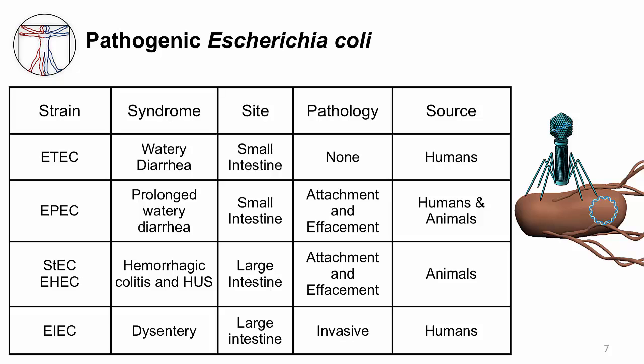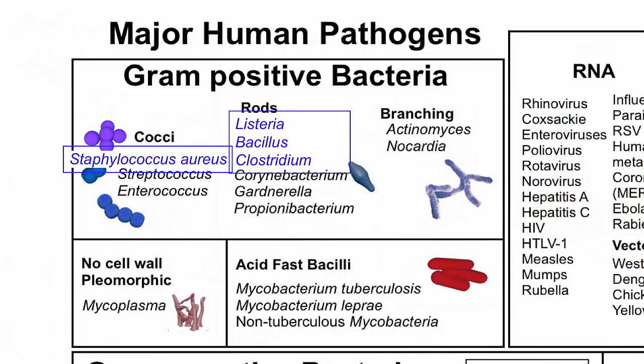Gram-positive bacteria can also cause gastrointestinal disease. Staphylococcus aureus causes food poisoning through preformed toxins and lives mainly on our skin, contaminating food during preparation. Another important gram-positive group are the clostridia — soil-dwelling anaerobes that make nasty toxins. Clostridium difficile is the most important cause of antibiotic-associated diarrhea and will be discussed in depth in a different module.